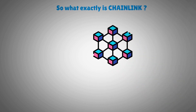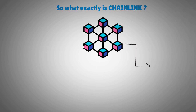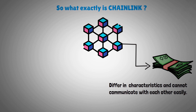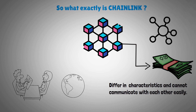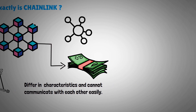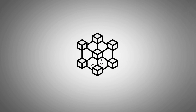So what exactly is Chainlink? Blockchains need to collaborate to provide us with the internet of money, but they differ in characteristics and cannot communicate with each other easily. Chainlink is a solution to this problem. It is a decentralized blockchain oracle network that allows smart contracts to securely communicate with real-world data and services outside of blockchain networks. This significantly enhances smart contract capabilities while maintaining security and reliability assurances of blockchain technology.